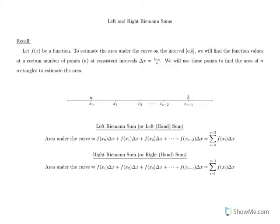To do that, we're going to find function values at a certain number of points — n number of points — at consistent intervals delta x. And delta x is going to be b minus a over n. That's the same thing as delta t from before. We will use these points to find the area of n rectangles to estimate the area.